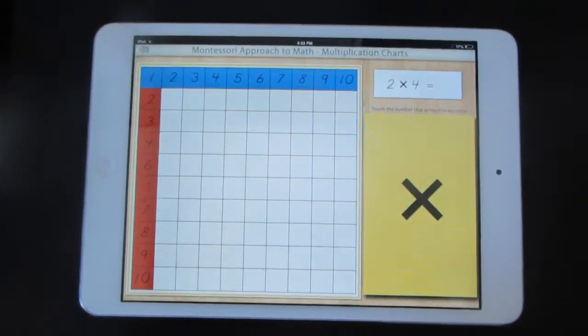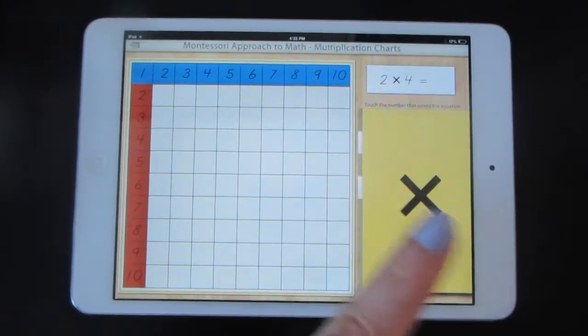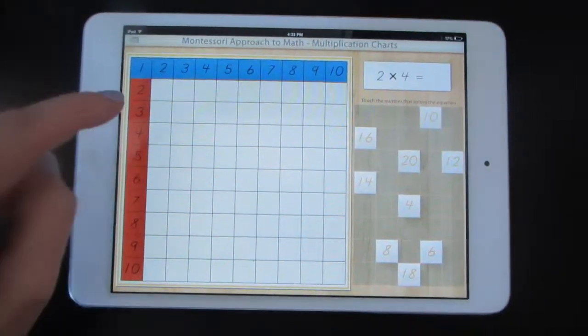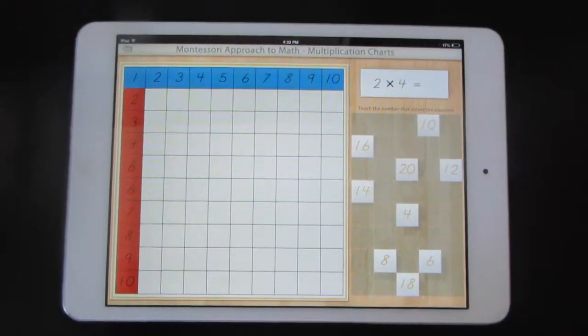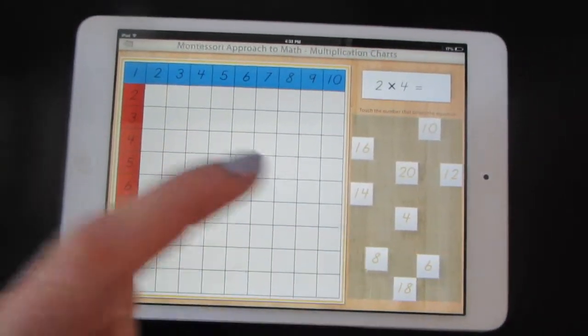Multiplication by twos again. This time they won't show you the whole chart. Two times four—see if you can remember the answer. Eight.